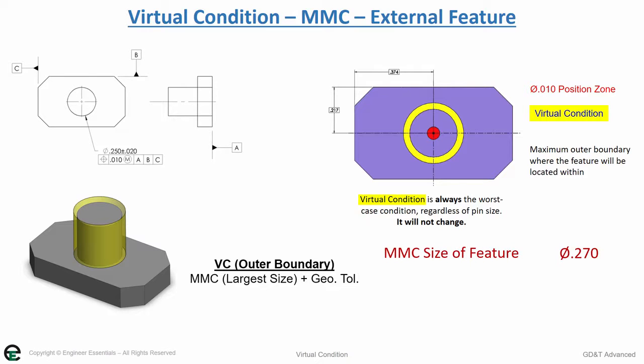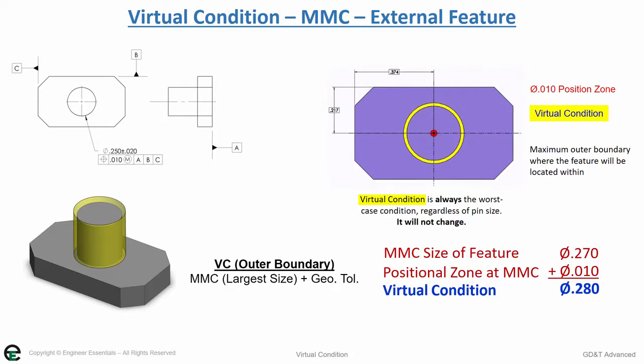This is .270, plus .010, which gives us .280. This means that there's an imaginary cylinder surrounding this pin of .280 that no point on the surface can ever cross.